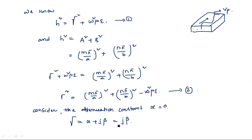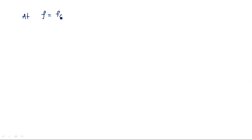We are going to calculate vp without any attenuation, meaning the entire input signal present at the input of the rectangular waveguide will be present at the output. So attenuation constant α = 0, and therefore γ = jβ. At the cutoff frequency of the waveguide, ω = ωc, and we know that at this frequency the propagation constant γ = 0.